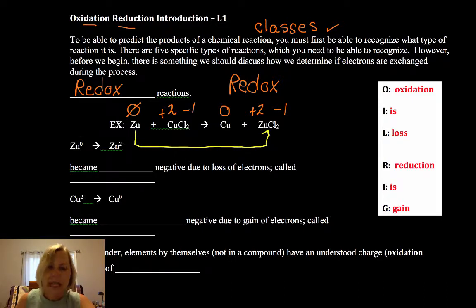Now the zinc went from zero to plus two. It changed oxidation numbers and I like to think of it since electrons are negative. The zinc became less negative due to a loss of electrons in a process called oxidation.